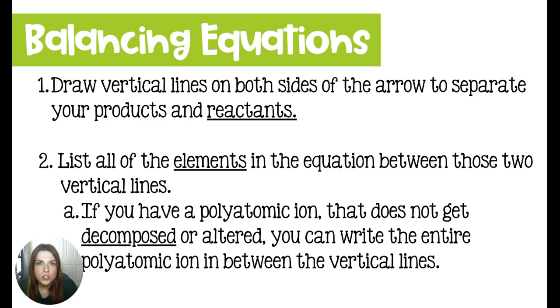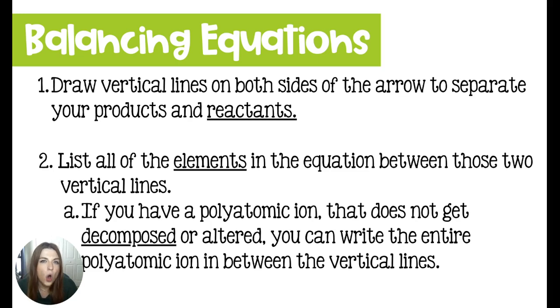What we're going to do is on the yield arrow, we're going to write two vertical lines on either side to separate the reactants from the products. And then in between those two lines, you're going to list all of the elements that are involved in the chemical reaction.